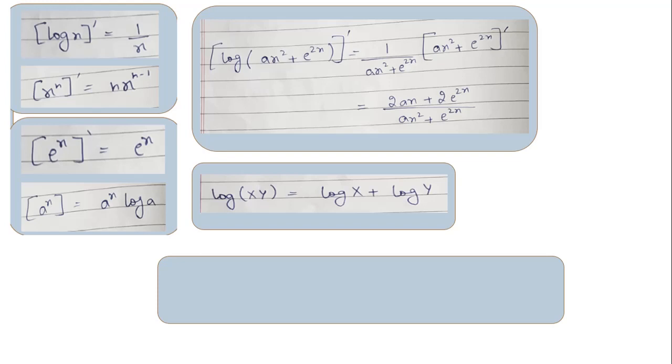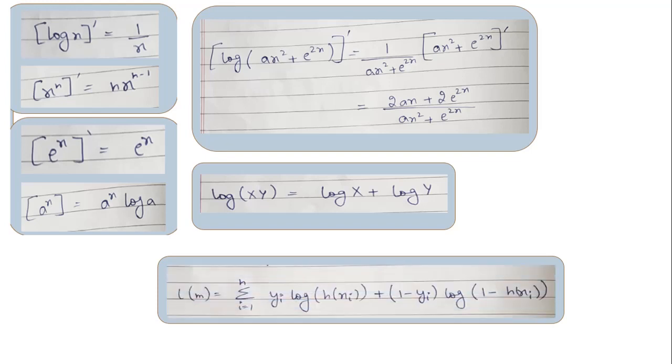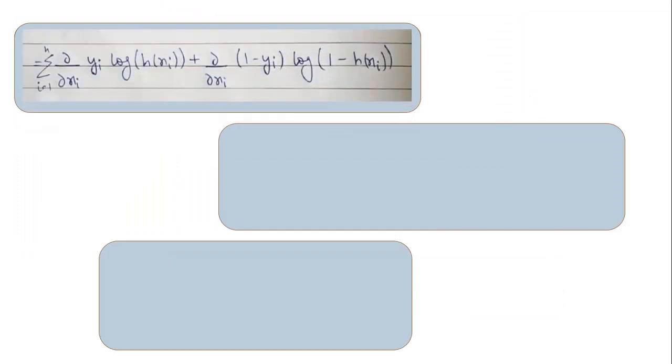One important property of log we will use later is that the log of a product becomes a sum: log(xy) = log(x) + log(y). Applying this, the log likelihood equation becomes the summation of y_i * log(h(x_i)) + (1 - y_i) * log(1 - h(x_i)). Now we will find the derivative of each term to get the final m value for drawing the straight line.